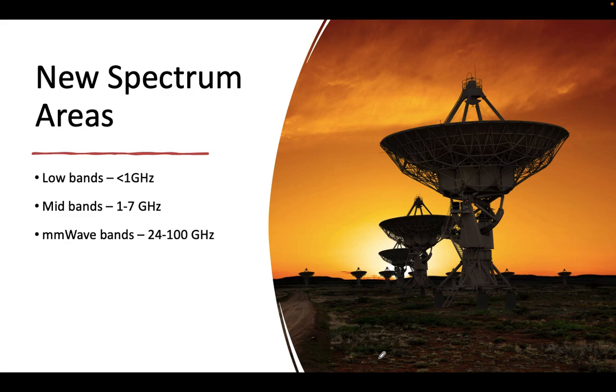If we look at the spectrum available till 5G, there were low bands in the range of less than 1 gigahertz, mid bands in the range of 1 to 7 gigahertz, and millimeter waves in the range of 24 to 100 gigahertz. In 5G, these bands were referred to as FR1 and FR2 or millimeter wave.